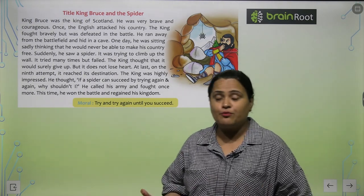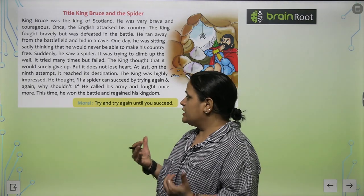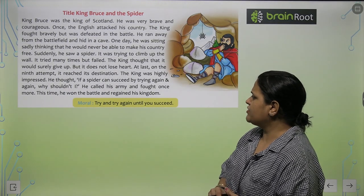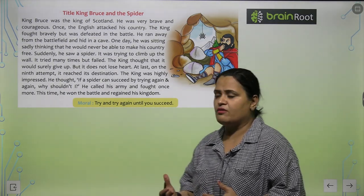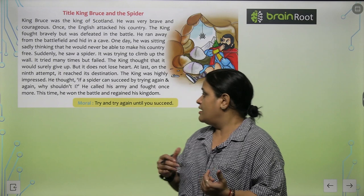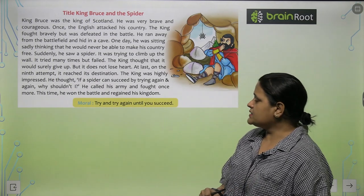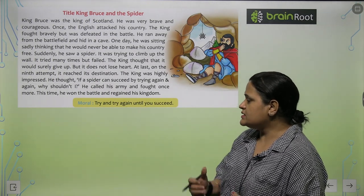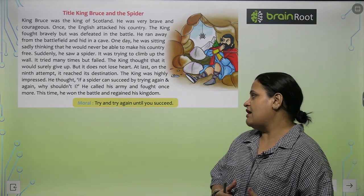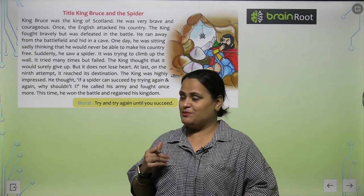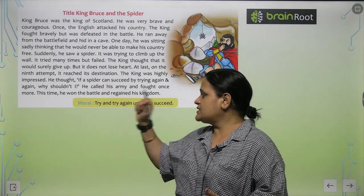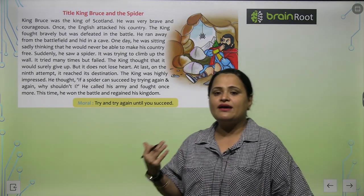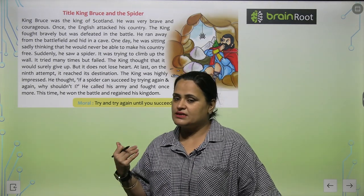The king thought that the spider would surely give up, but it did not lose heart. At last, on the ninth attempt, it reached its destination. The king was highly impressed. He thought: if a spider can succeed by trying again and again, why shouldn't I? He called his army and fought once more. This time he won the battle and regained his kingdom. The moral of the story is: try and try again until you succeed.